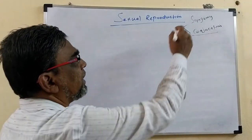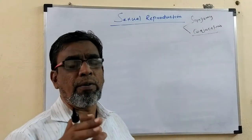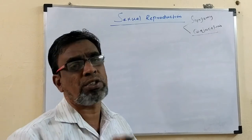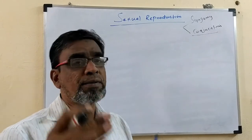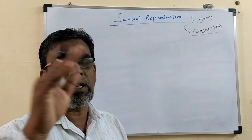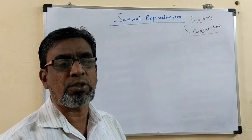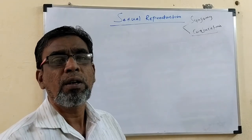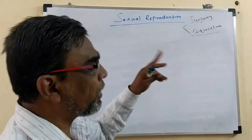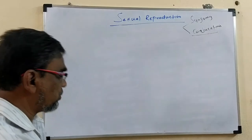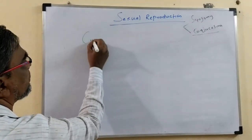Last class we studied syngami. What is syngami? It is otherwise called fertilization. What are the types of syngami? We have studied seven types. But in this class, we are going to discuss about conjugation. So, what is conjugation?